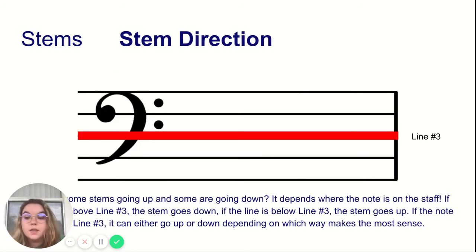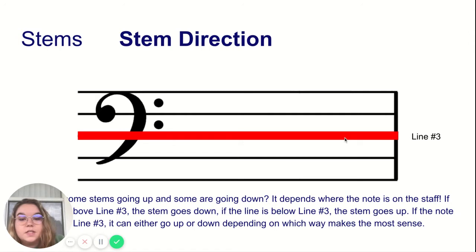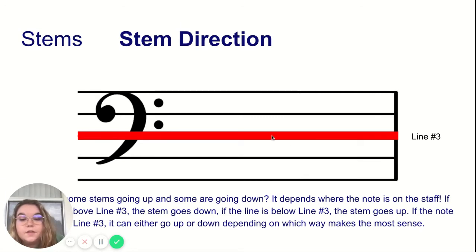The way that you decide whether a stem should go up or down is based on where the note is placed on the staff. If the note falls above line three, which is right here, then the stem is going to be pointed down and placed on the left side of the note head. But if it's below line three, then the stem is going to go up and be placed on the right side of the note head. If the note falls on line three, it can either go up or down, depending on the other notes that are around it.